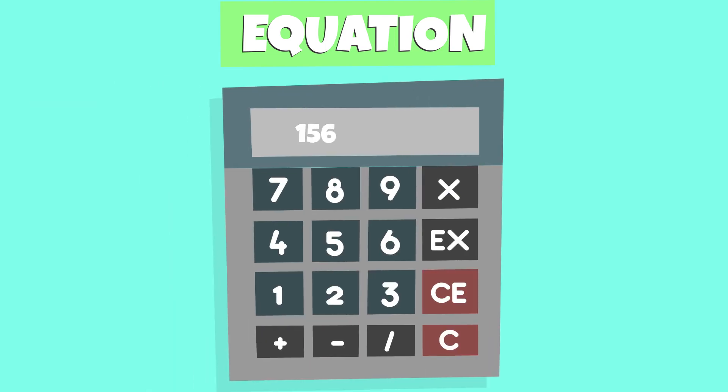Our final representation is using an equation or an equal sign. When we add 156 plus 150, that is equal to 306.